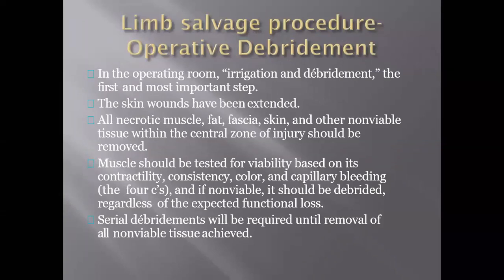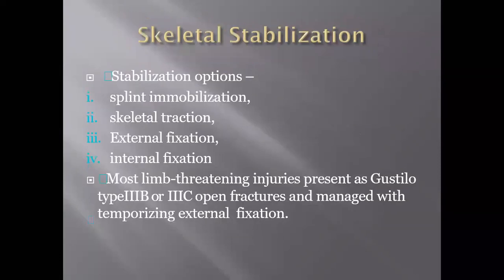Once we plan for limb salvage, we have to first do a debridement layer by layer — first excising all devitalized skin until fresh bleeding comes, then liberating the subcutaneous tissue. Muscle has to be assessed for viability based on its contractility, consistency, color, and capillary bleeding. Then we give thorough wound wash, and skeletal stabilization has to be done — mostly we will be doing external fixation for mangled extremities.